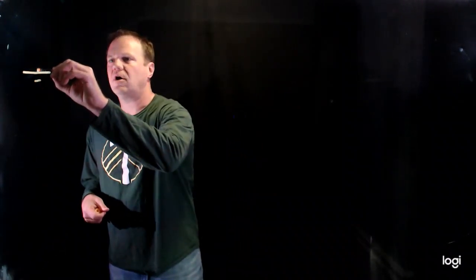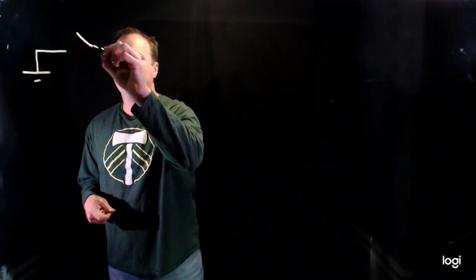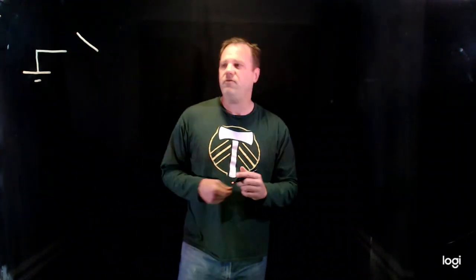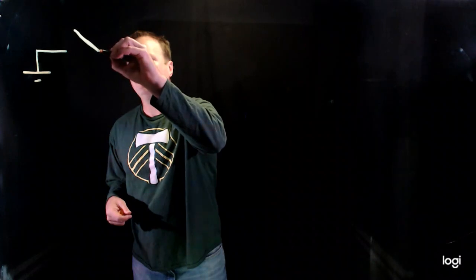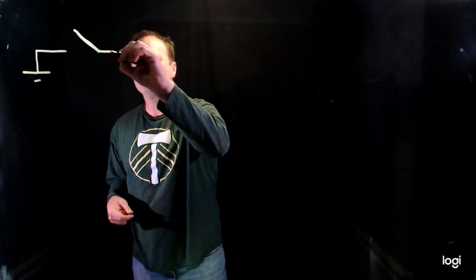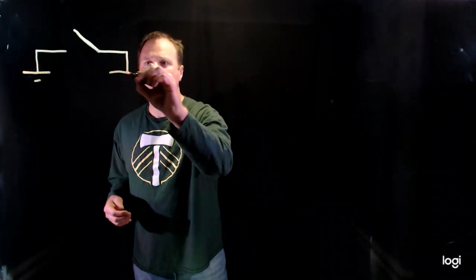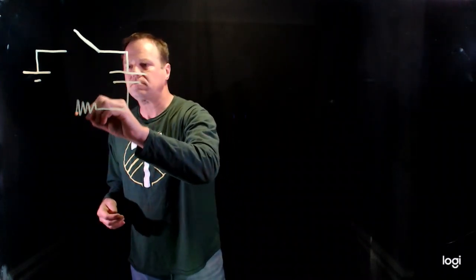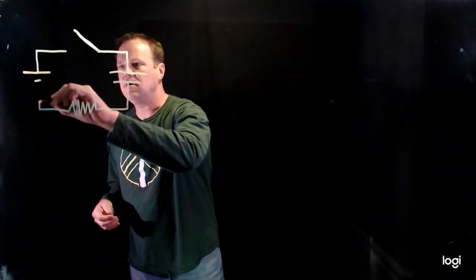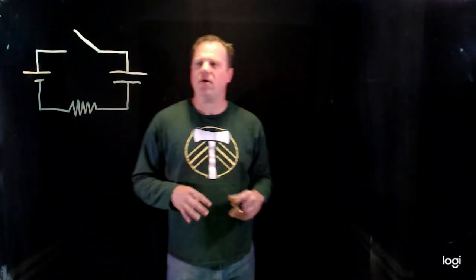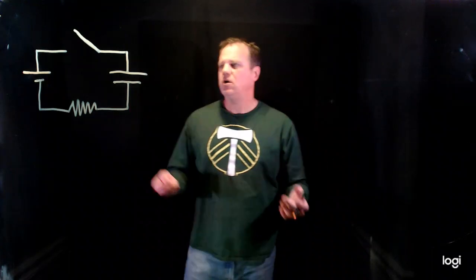I'm going to solve a charging RC circuit. Here's your stereotypical charging RC circuit. We would have a battery of known EMF, some sort of switch, and then a resistor and capacitor in series. It actually doesn't matter which order they come in, but our solutions will not be affected by the order. So: a battery, capacitor, and resistor of known quantities.